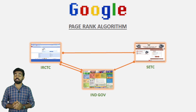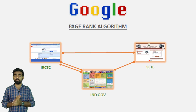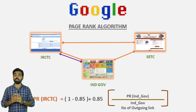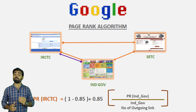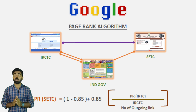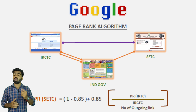So we can have 3 types of pages: IRCTC, SCTC, and Indian Government. So we can have these 3 types of pages with links. Now let's apply the formula. First, IRCTC — the incoming links are available, and there is a link from the Indian Government. The formula is PageRank with a damping factor: the PageRank of Indian Government divided by Indian Government's outgoing links, plus the PageRank of SCTC.